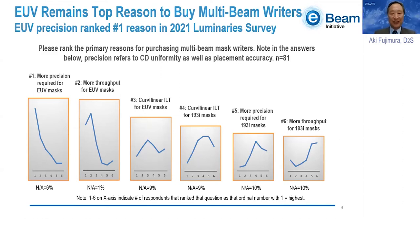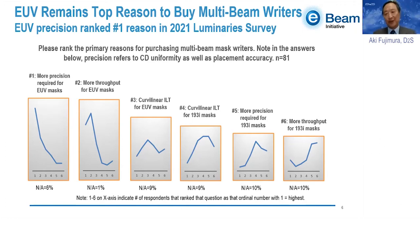You would think one reason multi-beam mask writers are selected is for curvilinear — and that's true. But the number one and number two reasons why multi-beam riders are being bought, according to luminaries, are because of EUV: more precision and more throughput. EUV masks are the primary driver for multi-beam rider adoption.